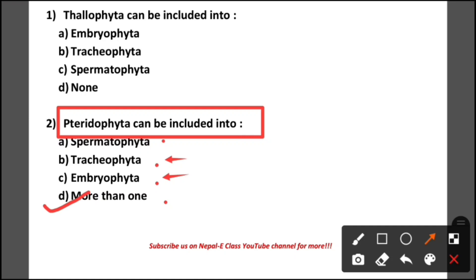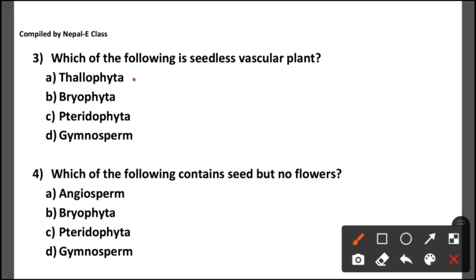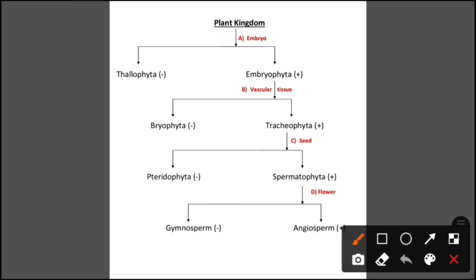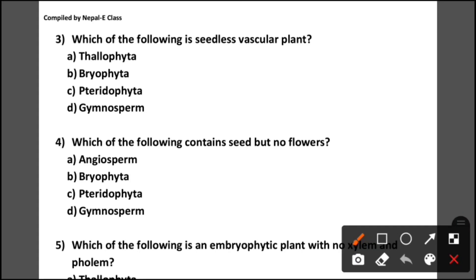Question number 3: Which of the following is a seedless vascular plant? Option A thallophyta, option B bryophyta, option C pteridophyta, option D gymnosperm. The correct answer is option C — pteridophyta — because pteridophyta falls under tracheophyta, so it has vascular tissue, but seed is not present, making it a seedless vascular plant.